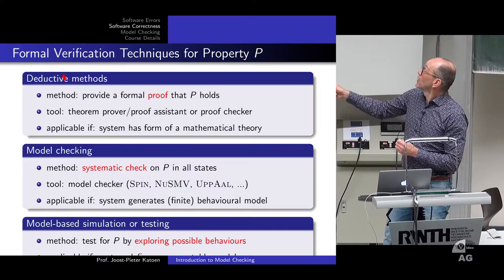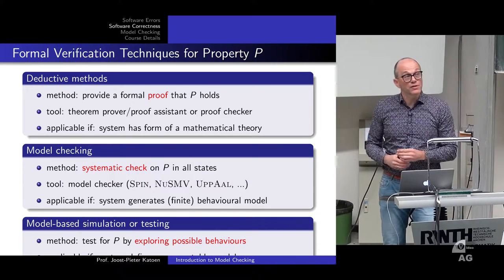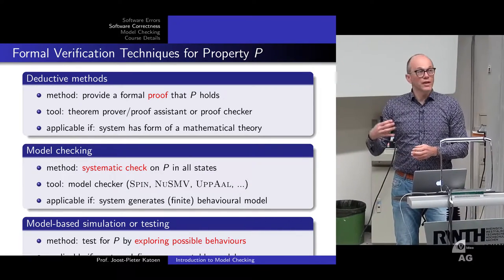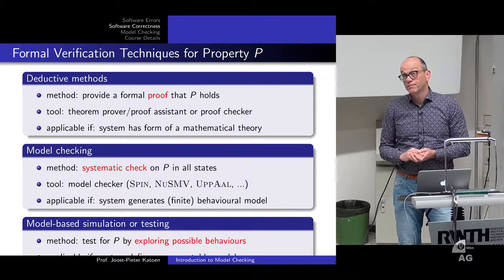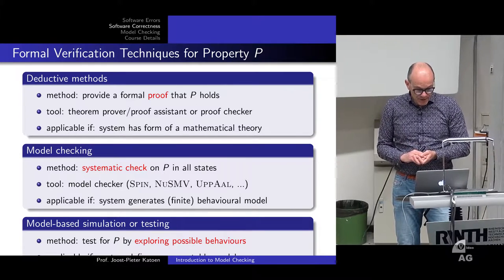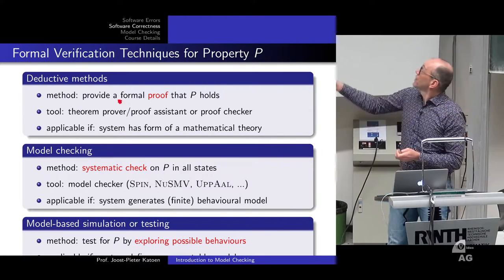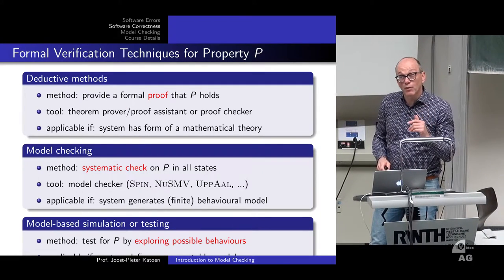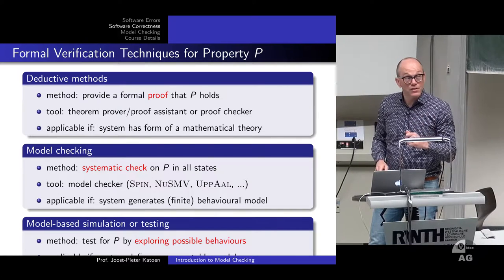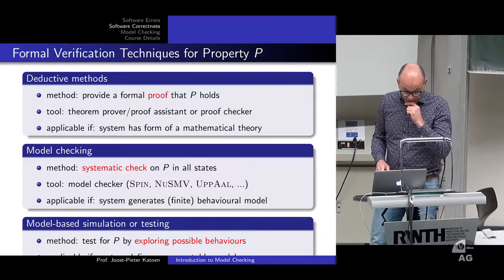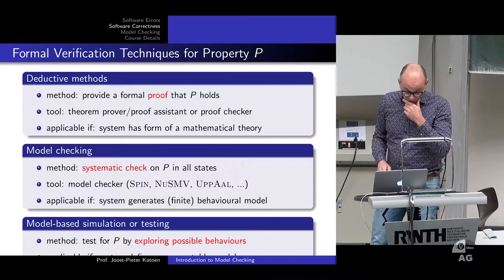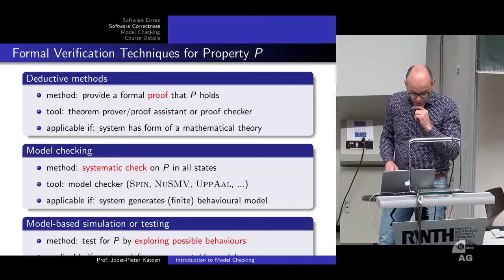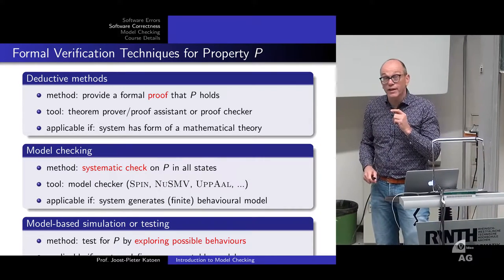Deductive methods are definitely applicable, but one drawback is the high interaction required with the human. These techniques were developed starting with Turing in the late 40s, then in the 60s. Then in the early 80s, two pairs of people developed the technique of model checking. The idea was not to look at the syntax of your program — not to write pre/post conditions and loop invariants without running the program — but to make a model and analyze it systematically by means of algorithms.